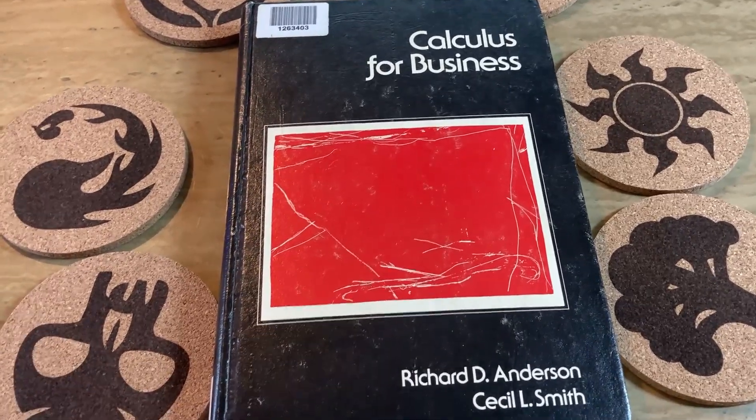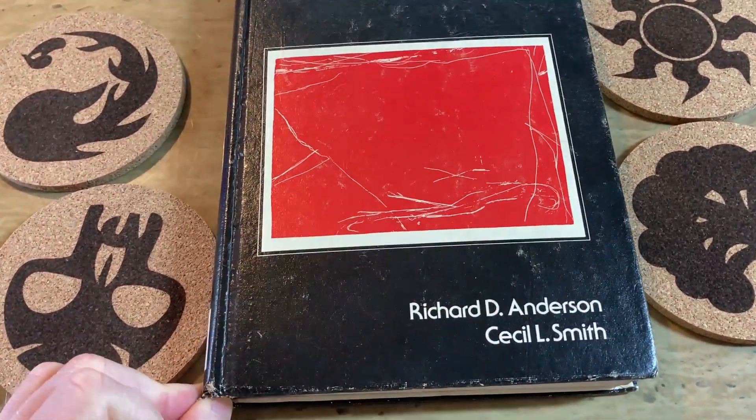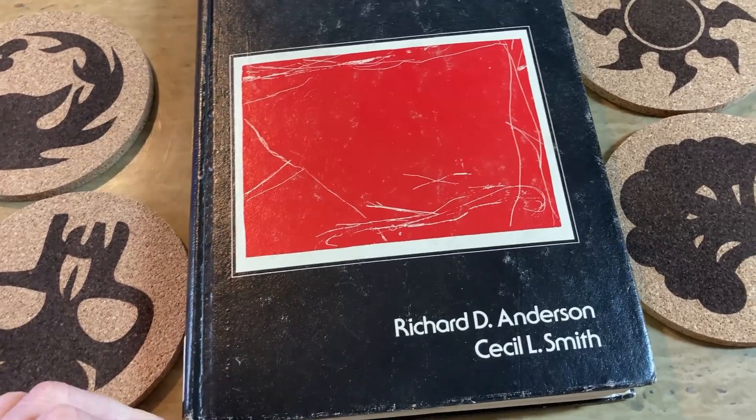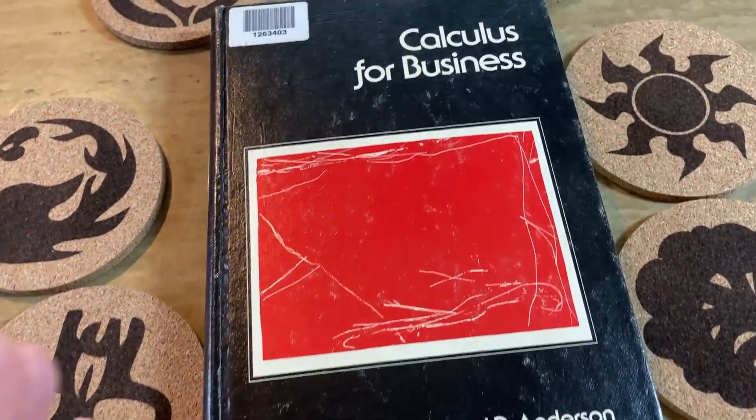This is a really old calculus book. It's called Calculus for Business and it was written by Richard D. Anderson and Cecil L. Smith.